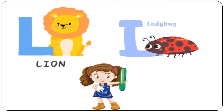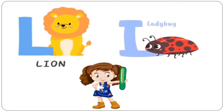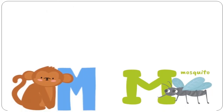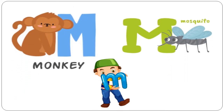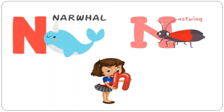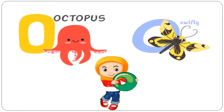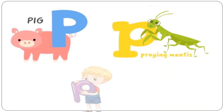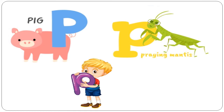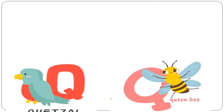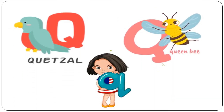L is for Lion. L is for Ladybug. M is for Monkey. M is for Mosquito. N is for Narwhal. N is for Netwing. O is for Octopus. O is for Owlfly. P is for Pig. P is for Praying Mantis. Q is for Quetzal. Q is for Queen Bee.